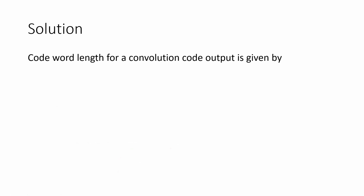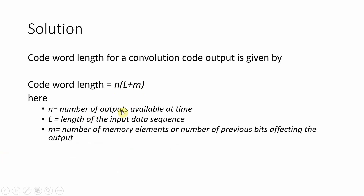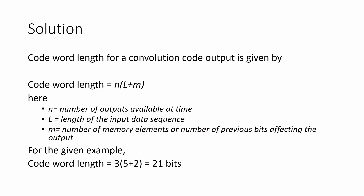To calculate the codeword length of the convolution code, the formula is n × (L + m). Here, n is equal to the number of outputs available at a time, capital L is equal to the length of the input data sequence, and small m is the number of memory elements or number of previous bits affecting the output. For our example, n equals 3, capital L equals 5 (the length of the input data sequence), and small m equals 2. So the length of the codeword at the output will be equal to 21 bits.